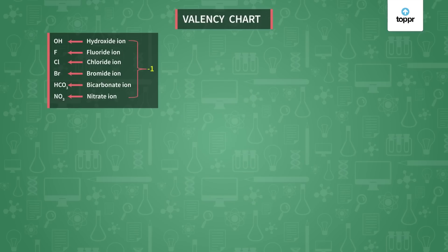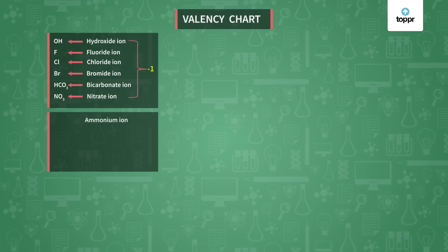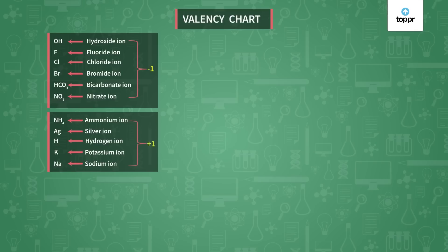Now let's come to the second group. The second group has ammonium — the polyatomic ion NH4 — next is silver (Ag), then hydrogen (H), then potassium (K) and sodium (Na). This group has valency plus 1.